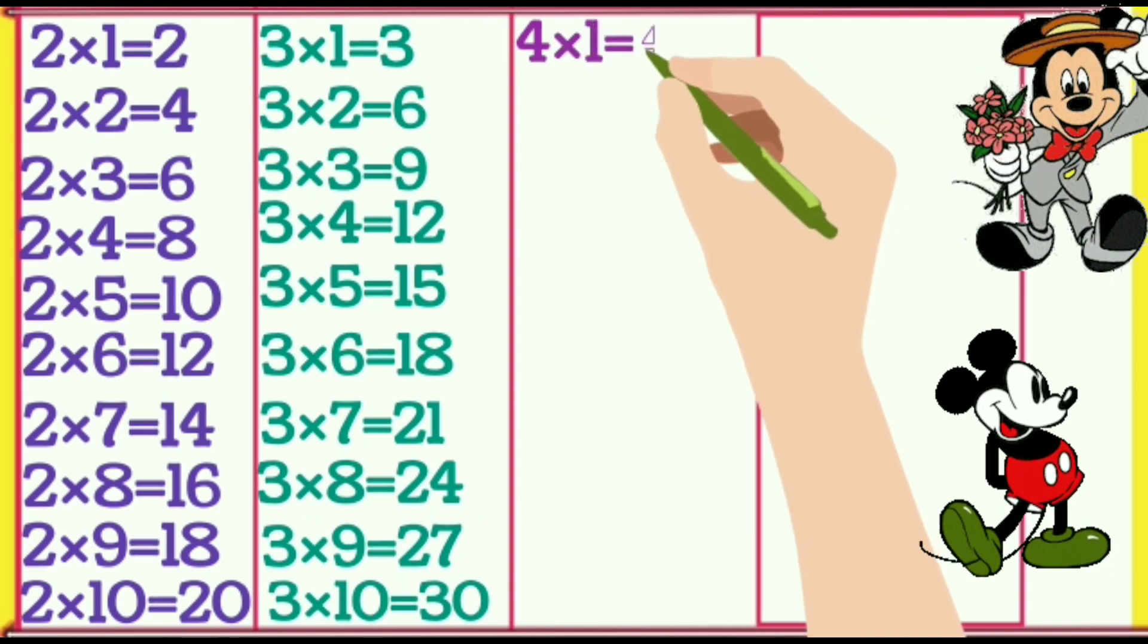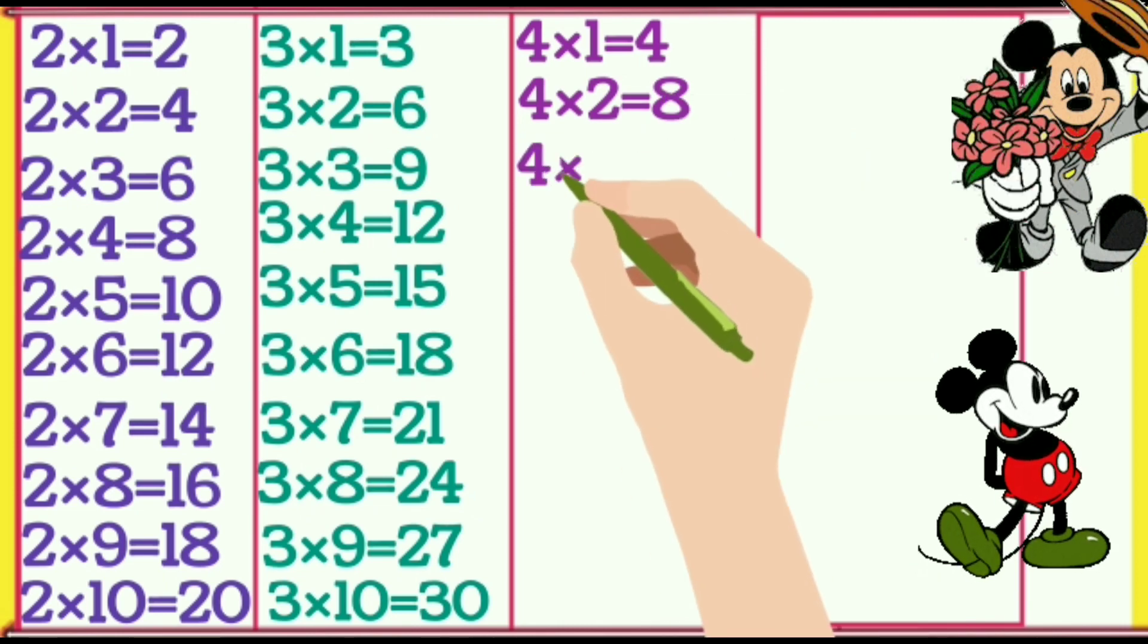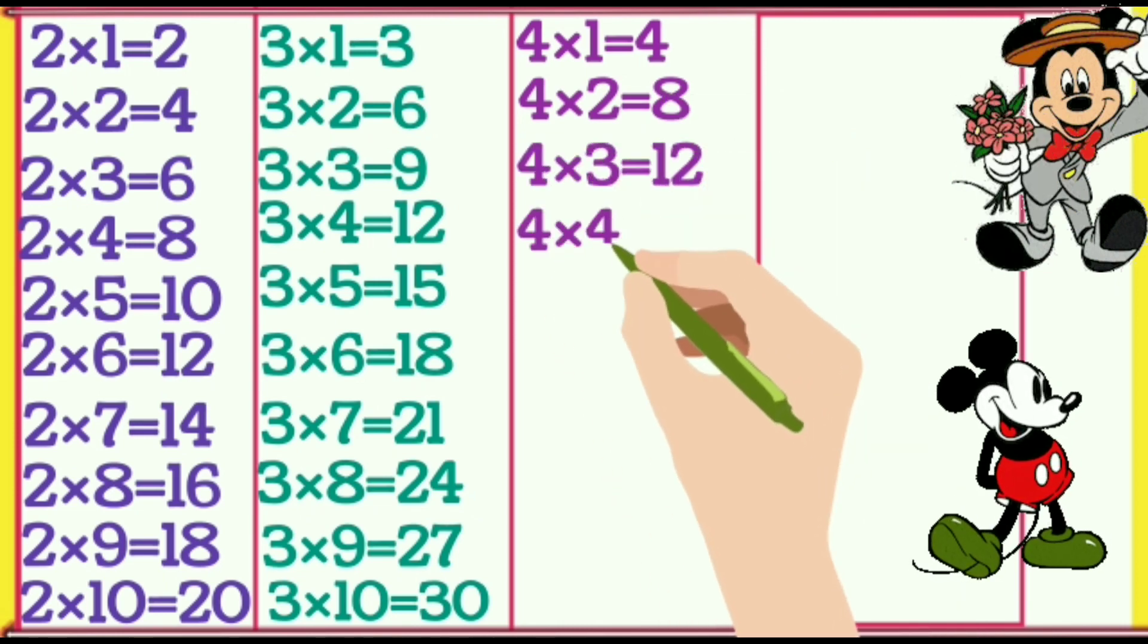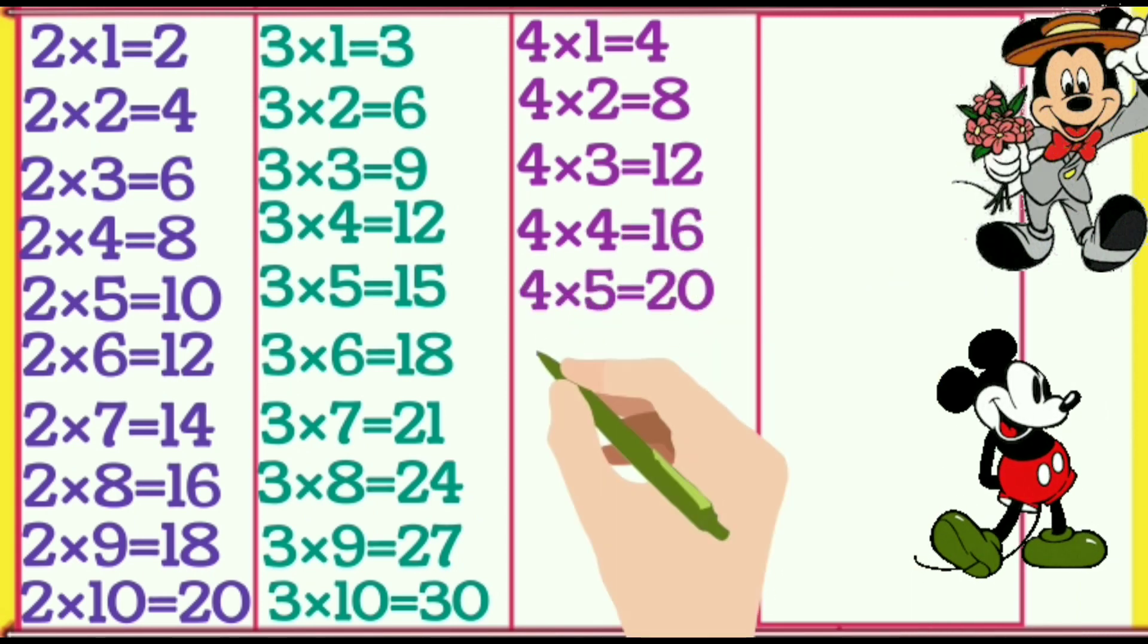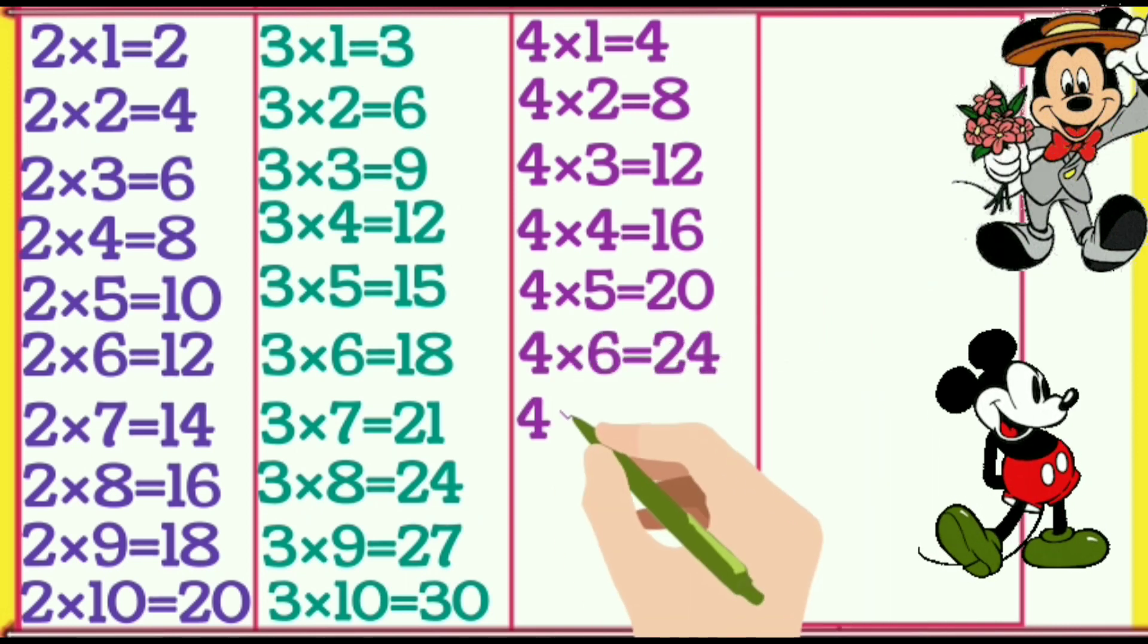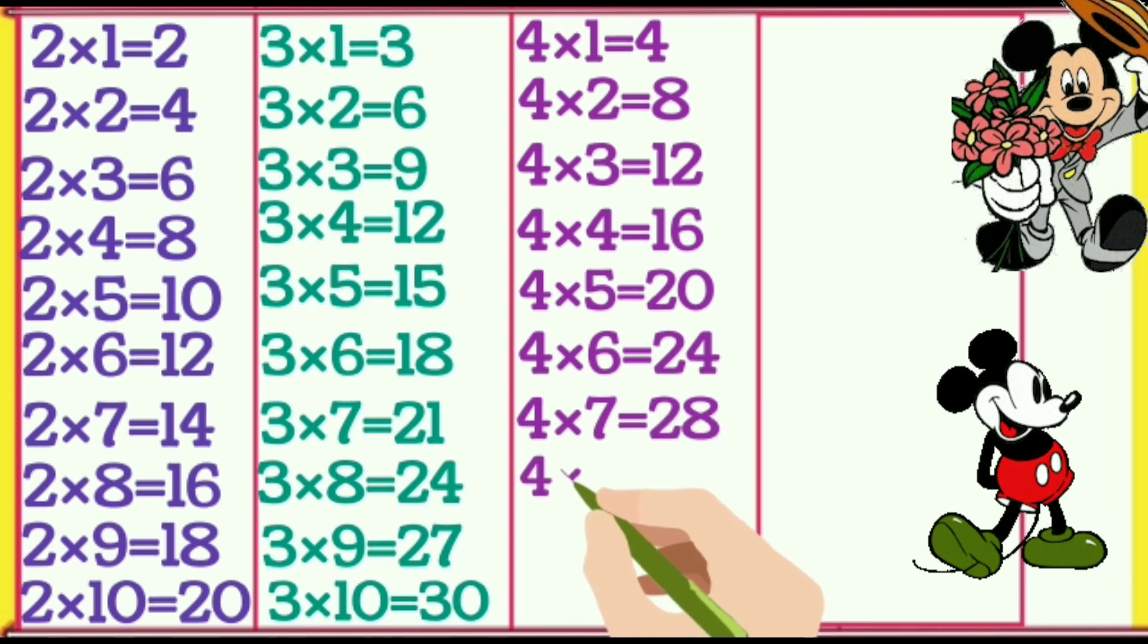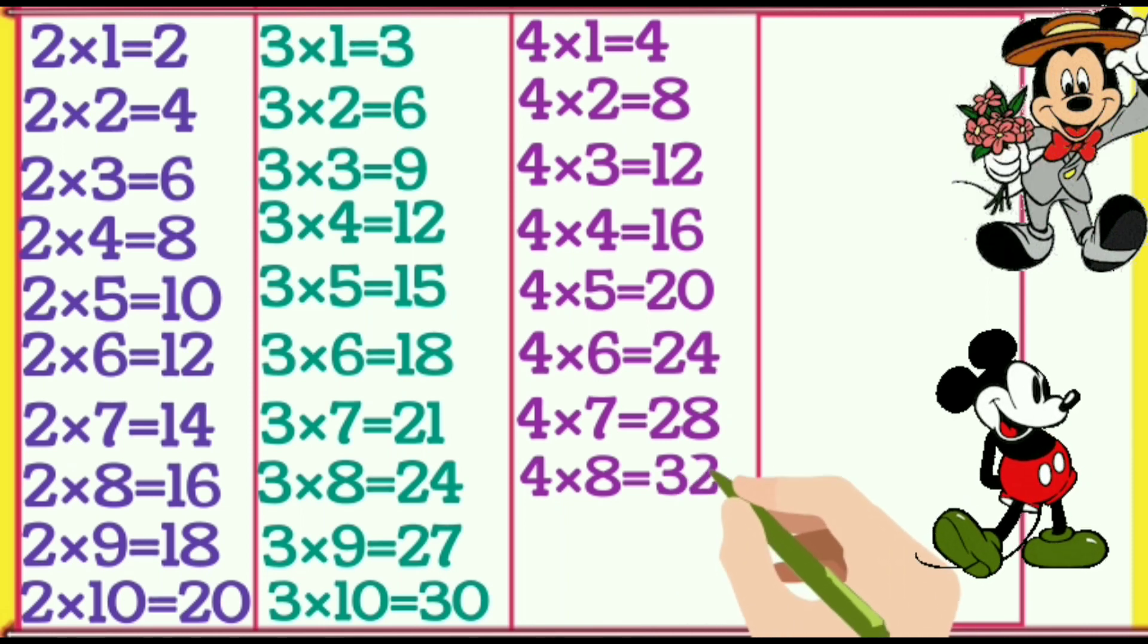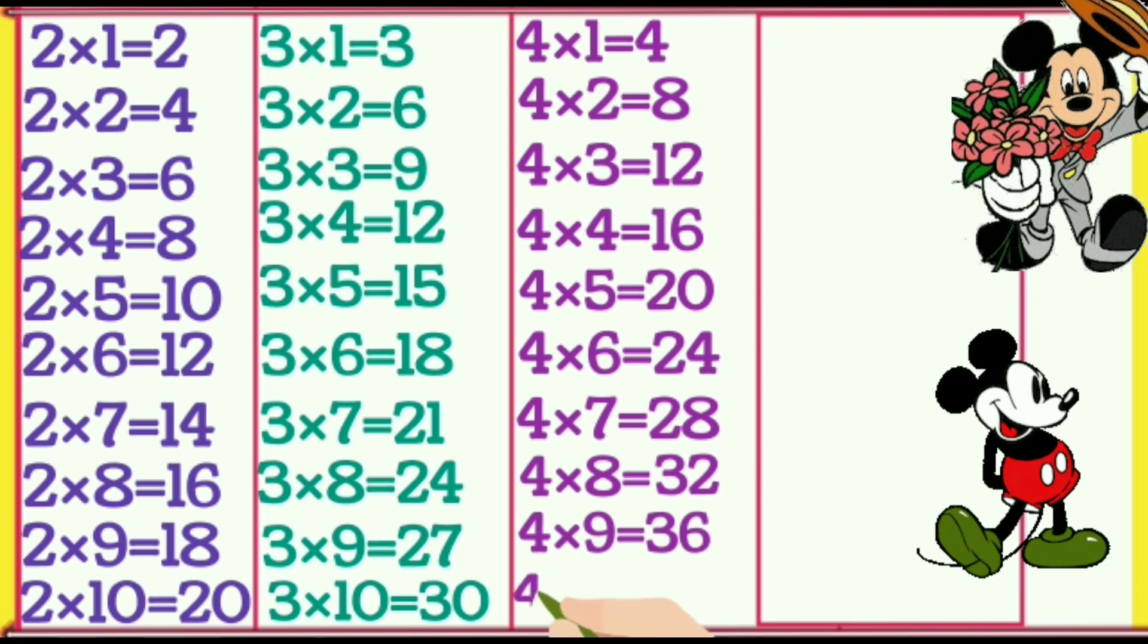4×1=4, 4×2=8, 4×3=12, 4×4=16, 4×5=20, 4×6=24, 4×7=28, 4×8=32, 4×9=36.